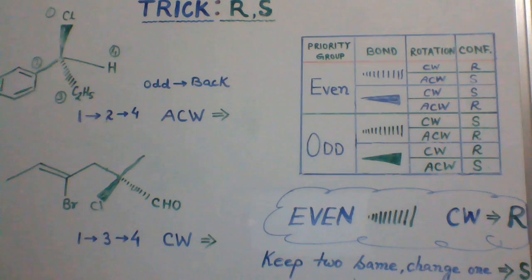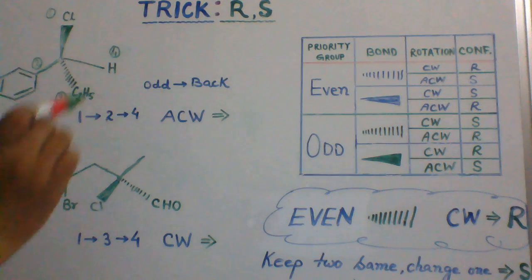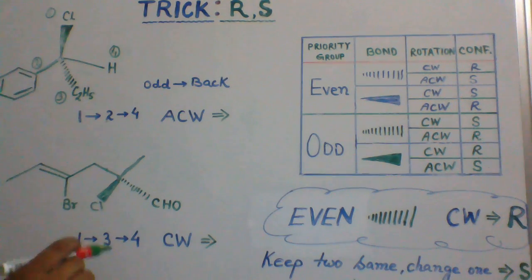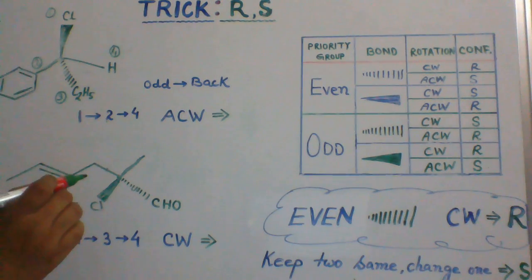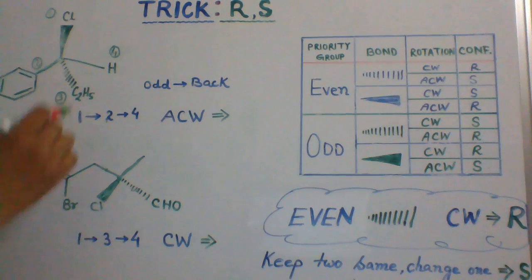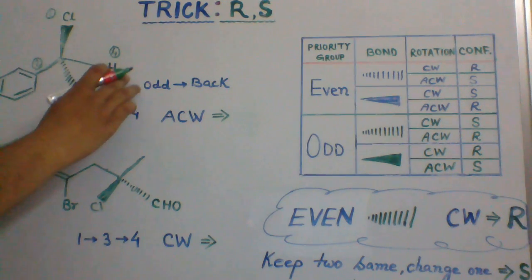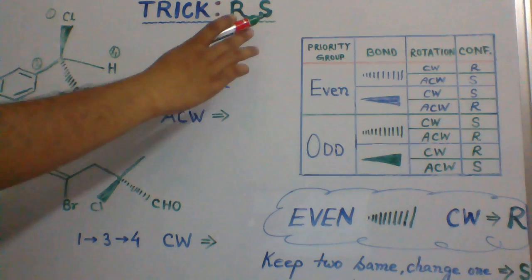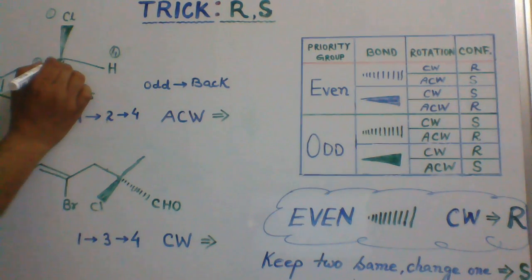Hello and welcome to Kementor. In this video, we shall deal with a trick to assign R or S configuration to a stereogenic center. Let's consider this chiral molecule. We have to assign R or S configuration at this chiral center.